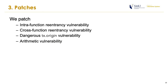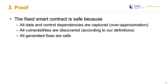We handle intra-function reentrancy, cross-function reentrancy, cross-transaction origin, and arithmetic vulnerabilities. These vulnerabilities are formally defined in our paper. According to the way we analyze smart contracts, the fixed smart contract is safe: all data and control dependencies are captured, all vulnerabilities are discovered, and all generated fixes are safe.